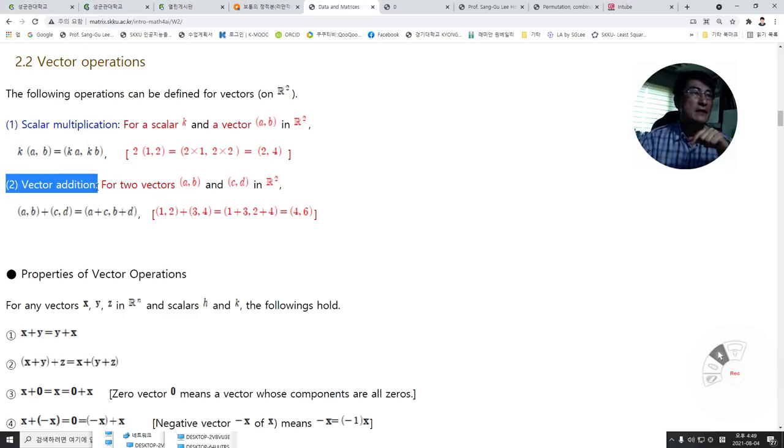Second, vector addition. For vectors (A, B) and (C, D) in R², the addition of these two vectors is defined this way. For example, if we have two vectors (1, 2) and (3, 4), then the addition of these two vectors is (4, 6), the addition of each component at the same place.